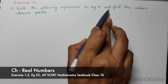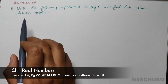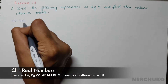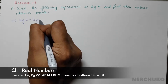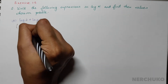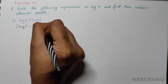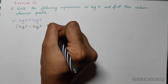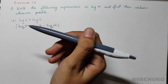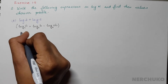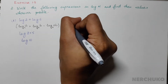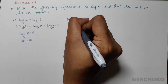Write the following expressions as log n and find the values wherever possible. For the first part, we have log 2 plus log 5. Using the formula log a to base n plus log b to base n equals log of a times b to base n, applying this formula gives log of 2 times 5, which is log 10.